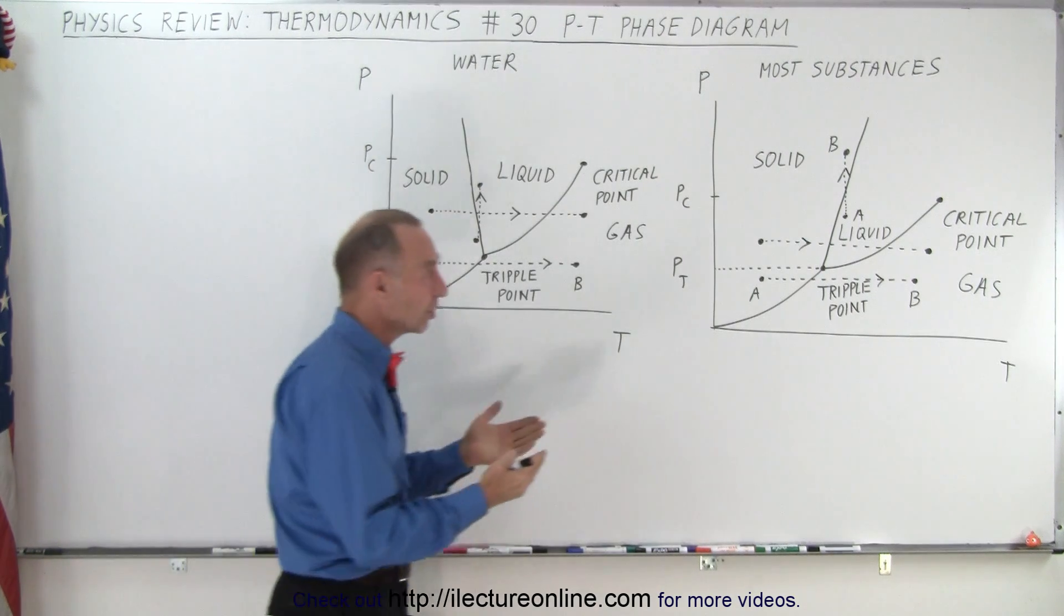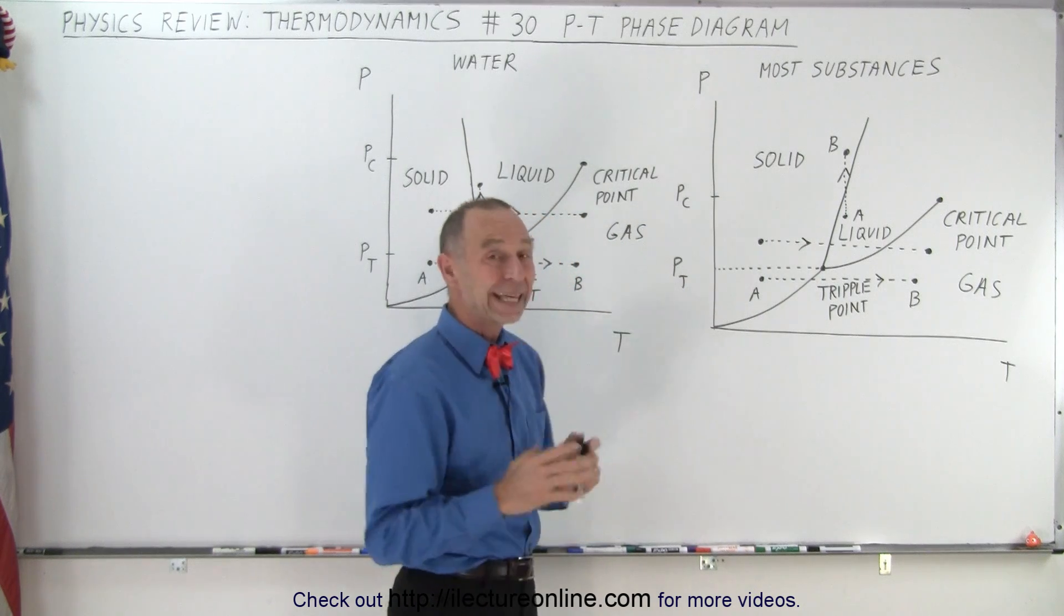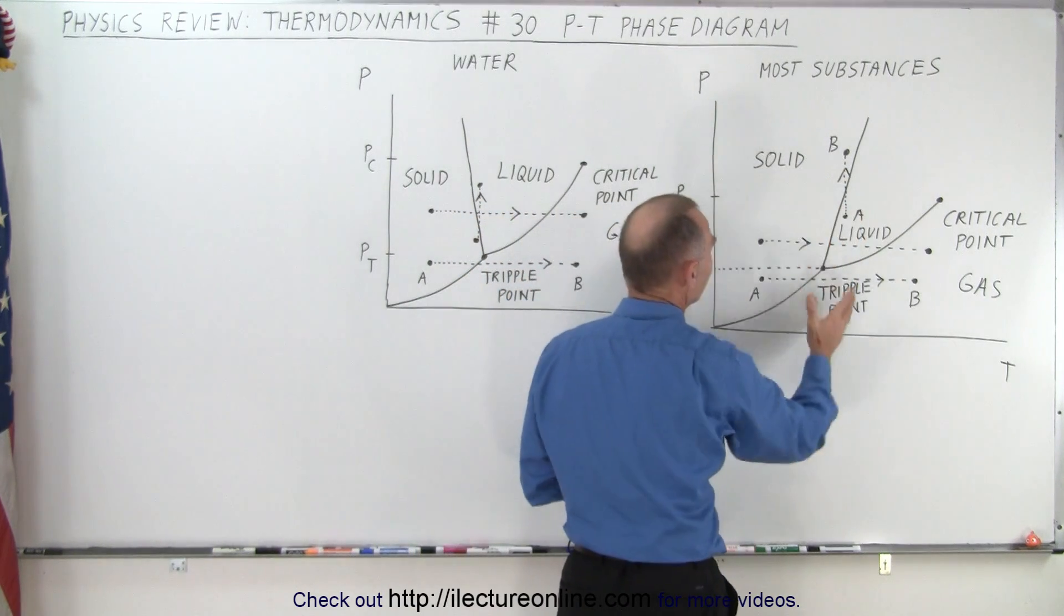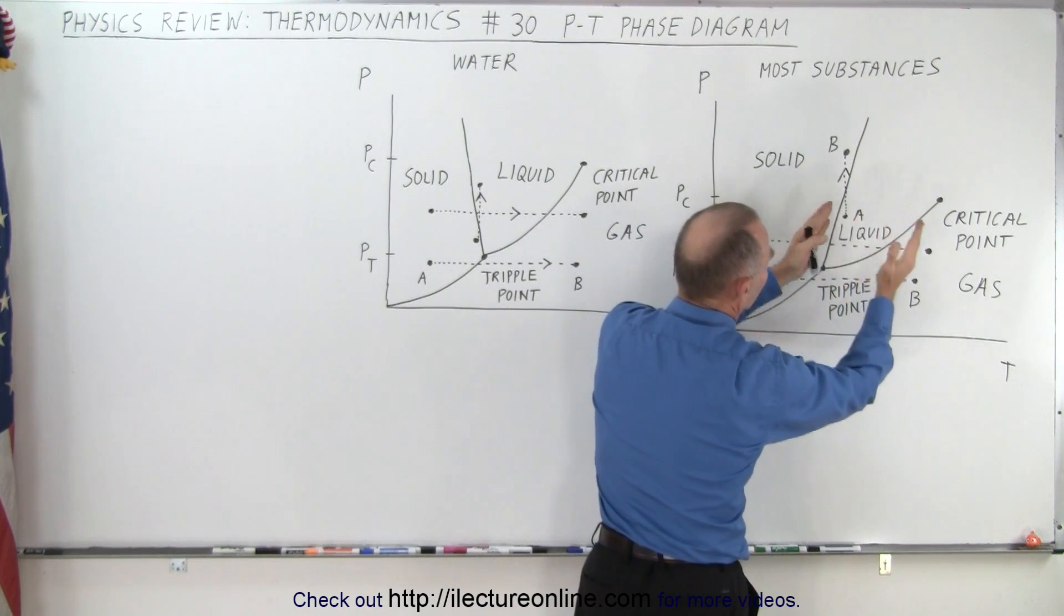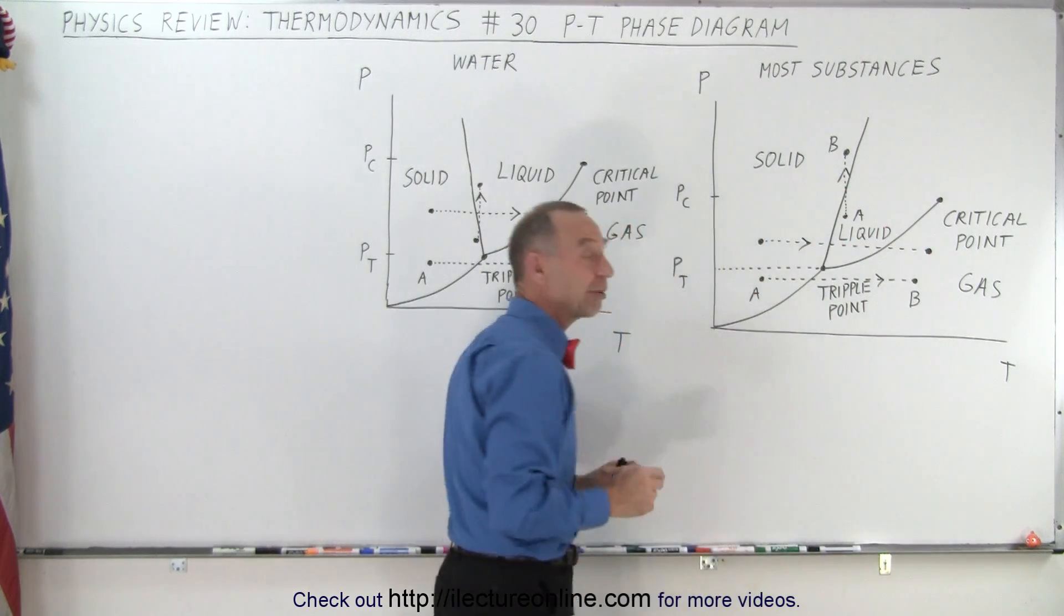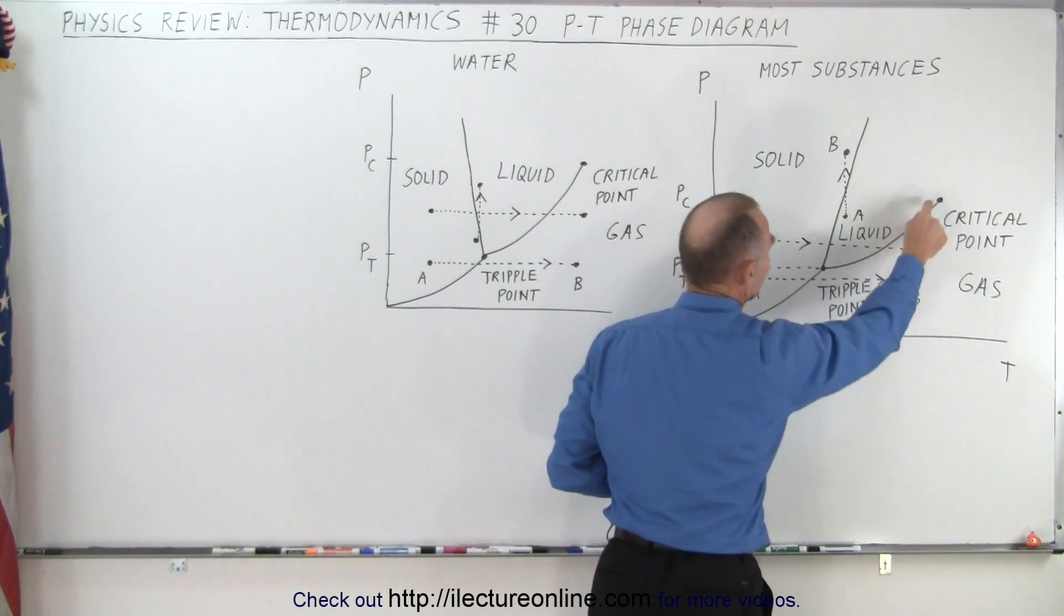For most substances, the diagram looks like this. Notice there's some key things in there. There are dividing lines that separate when the substance is a solid, when it's a liquid, and when it's a gas. And then we have two particular points on the diagram, called the triple point and the critical point.